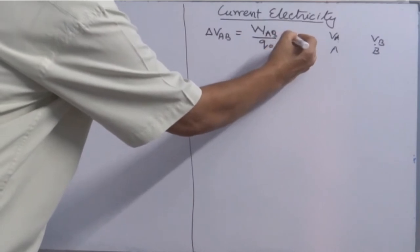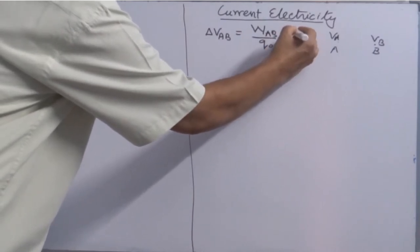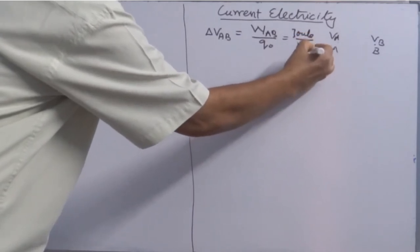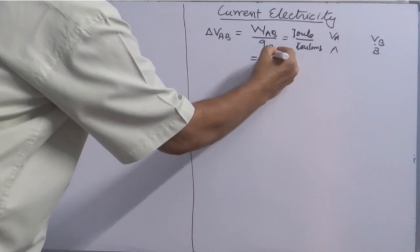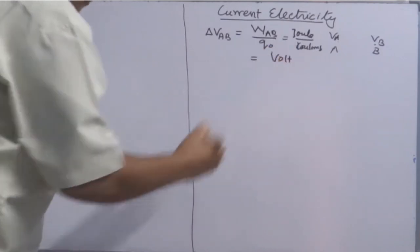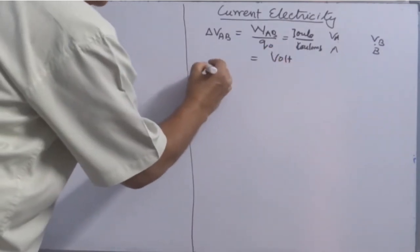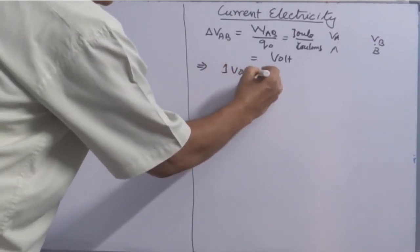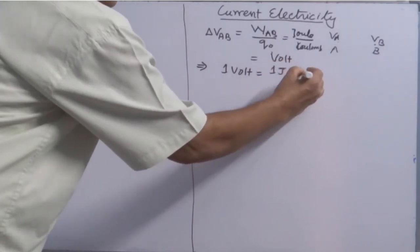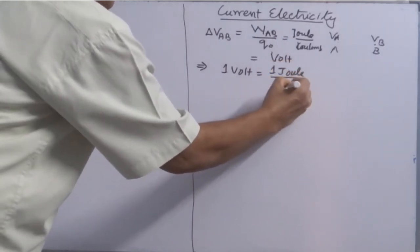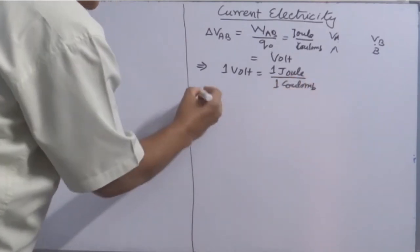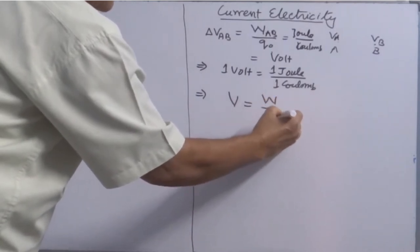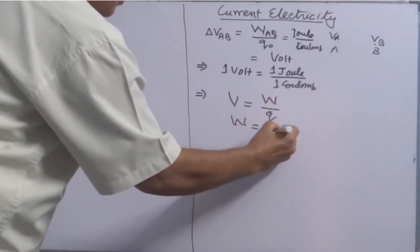Looking at SI units, the unit of work done is Joule and charge is Coulomb. So potential difference comes out in Volts. 1 Volt is equal to 1 Joule per 1 Coulomb. In general, potential difference V equals work done divided by Q. Therefore, work done is also equal to Q times V. Whenever any charge is placed between two points where potential difference exists, this potential does work.